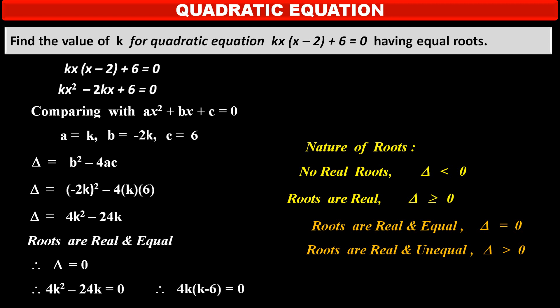Therefore, by taking 4k common, we get 4k(k - 6) = 0. Therefore, either k is equal to 0, or k is equal to 6.